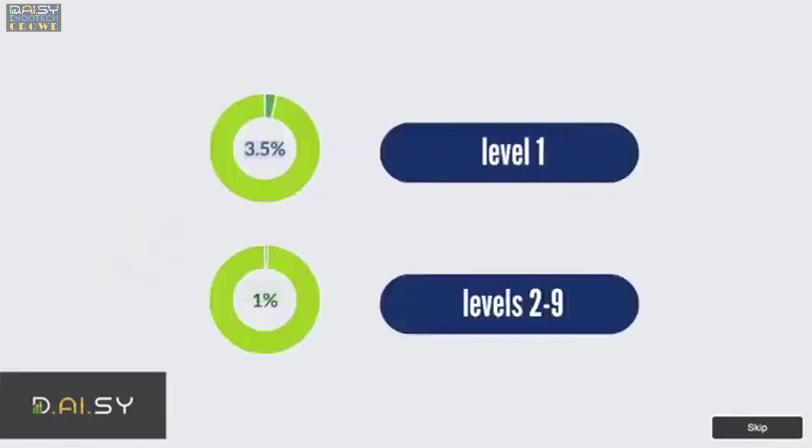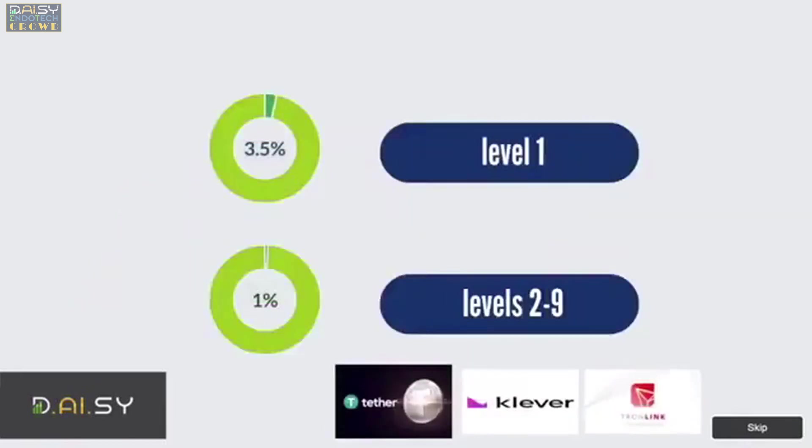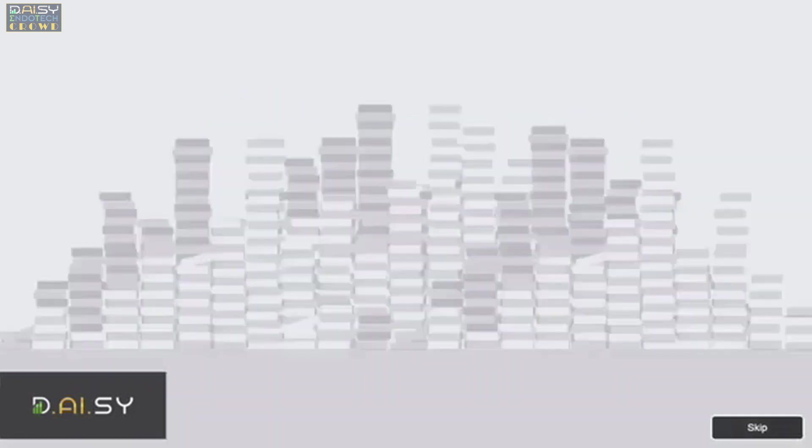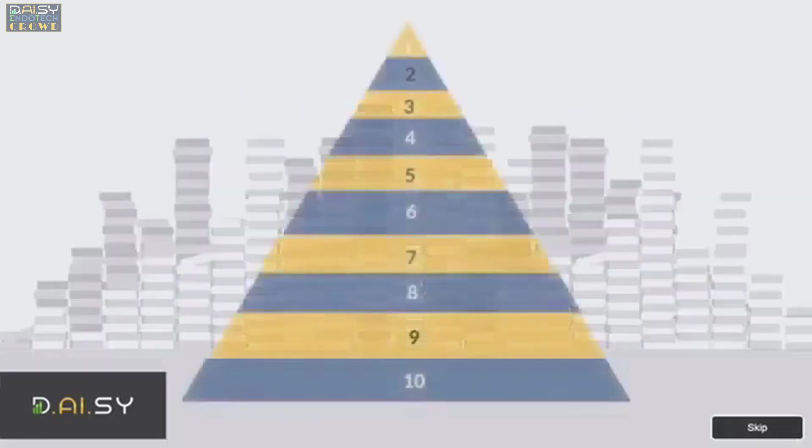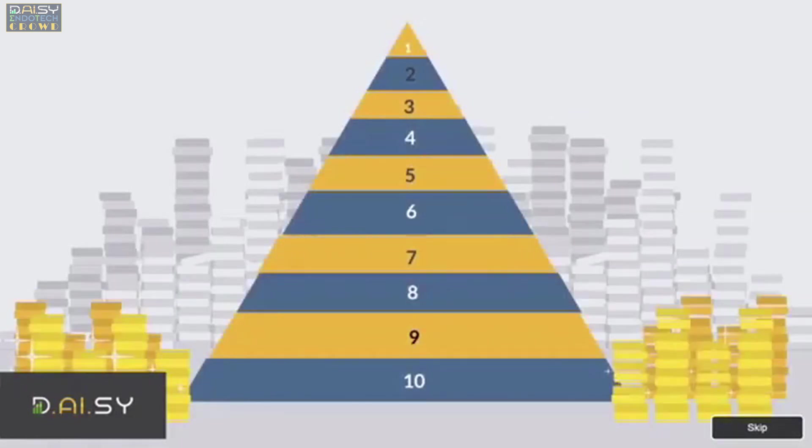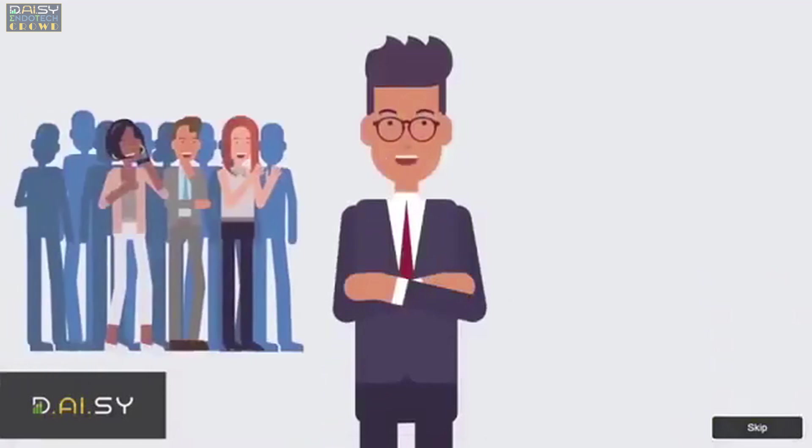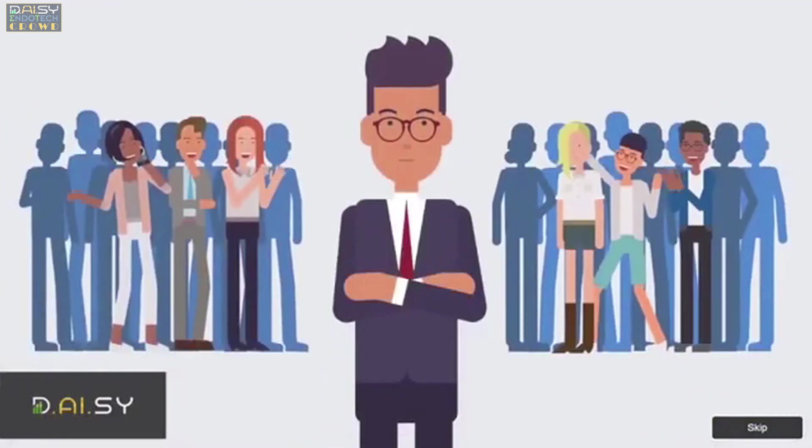You will be rewarded 3.5% on your level 1 and 1% on each of levels 2 through 9. You will automatically be rewarded from the trading rewards on level 1 and 2, and levels 3 through 10 follow matrix rules to qualify for levels.